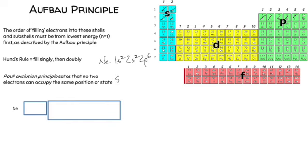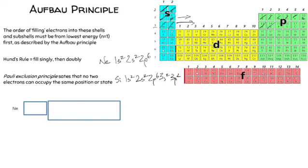Let's do silicon using the periodic table. We have 1S2, 2S2, then 2P6 — same as neon — then down to the third level: 3S2, then across to 3P. Silicon is the second element in the 3P block, so it's 3P2. The full electron configuration for silicon is 1S2, 2S2, 2P6, 3S2, 3P2. That's the easiest way to work out electron configuration using the periodic table.